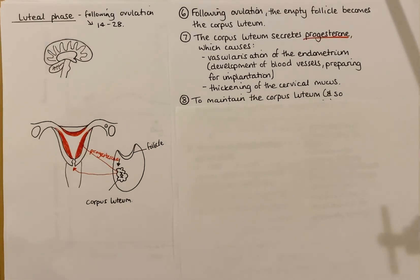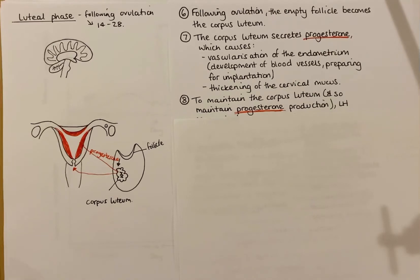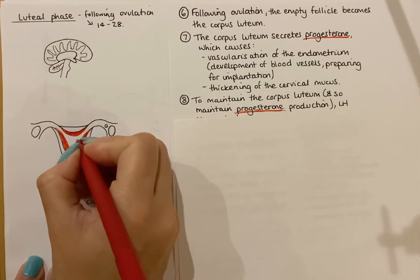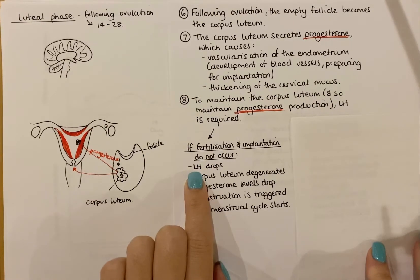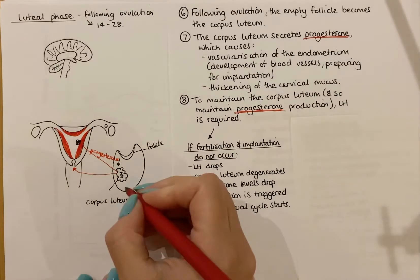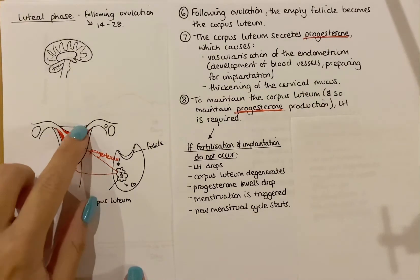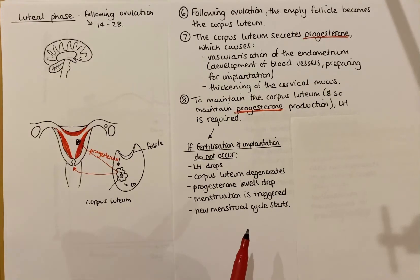For the corpus luteum to be maintained and for progesterone to continue to be produced, you need LH — or a hormone produced by the implanted embryo. If fertilization does not occur, LH drops, or the hormone that would normally have been produced by the embryo is not present. Therefore, the corpus luteum degenerates and breaks down, and progesterone levels drop. When progesterone levels drop, the endometrium is no longer maintained, so it begins to break down and is lost — that is why menstruation is triggered, and a new menstrual cycle begins.